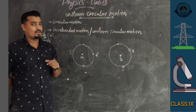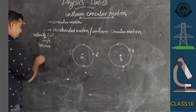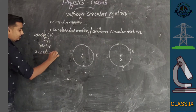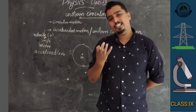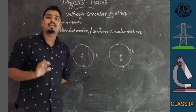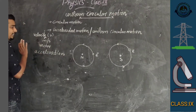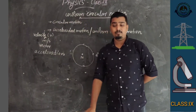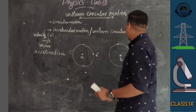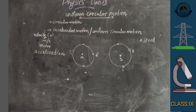Uniform circular motion is also called accelerated motion. Why? First, what is acceleration? Acceleration is the change in velocity per unit time. The velocity of an object can change if the speed changes — if the speed of the body changes, velocity also changes.